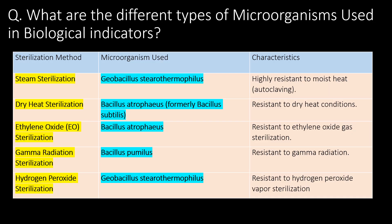Very important question: what are the different types of microorganisms used in biological indicators? Referring to a table for various sterilization methods, microorganisms commonly used as biological indicators and their characteristics: for steam sterilization, dry heat sterilization, ethylene oxide sterilization, gamma radiation sterilization, and hydrogen peroxide sterilization, we use Geobacillus and Bacillus species as biological indicators, due to their resistance toward those particular sterilization methods.